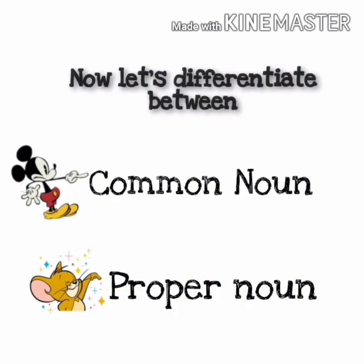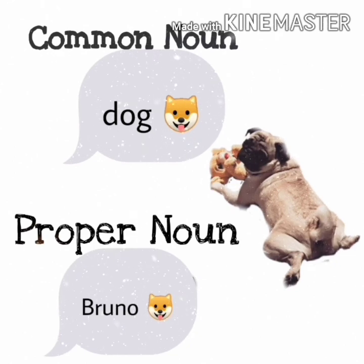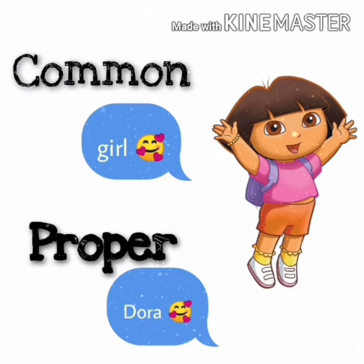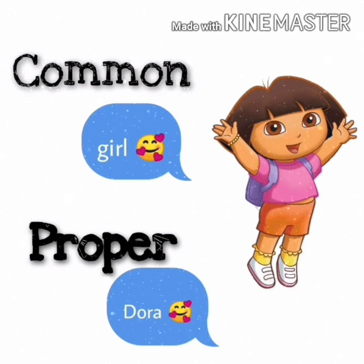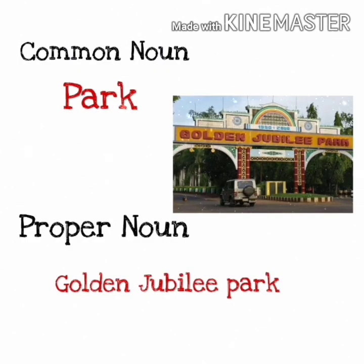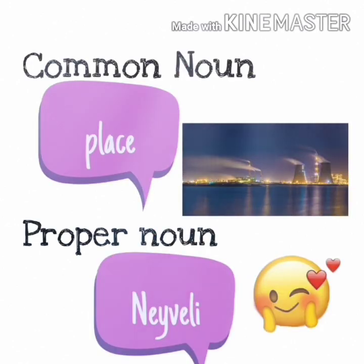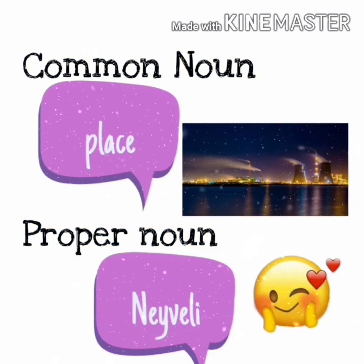Now let us differentiate between common noun and proper noun. Common noun: dog — proper noun: Bruno. Common noun: girl — proper noun: Dora. Common noun: park — proper noun: Golden Jubilee Park. Common noun: place — proper noun: Nevely.